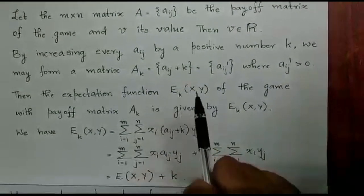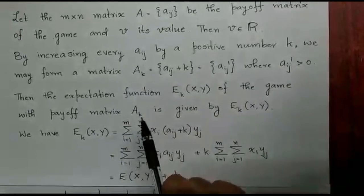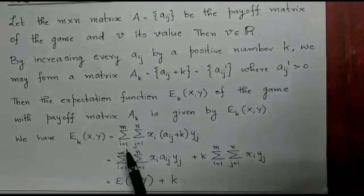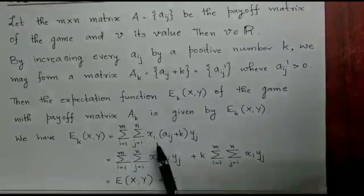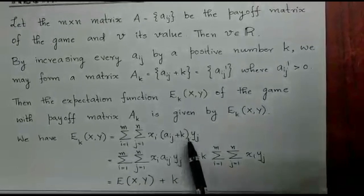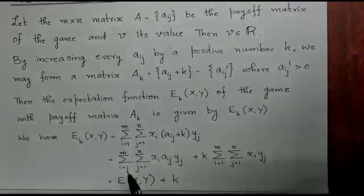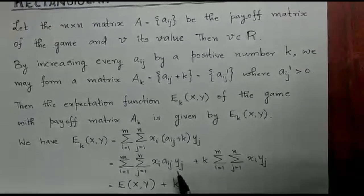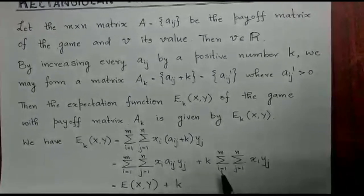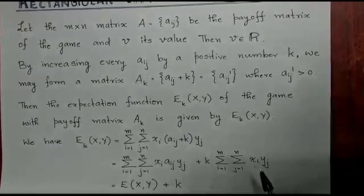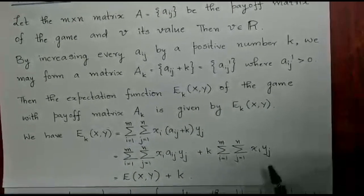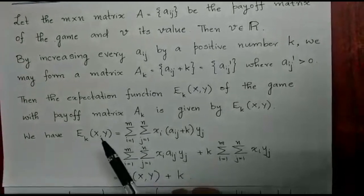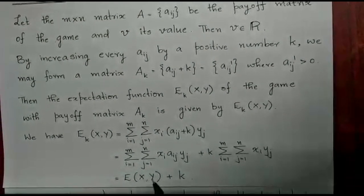Then the expectation function EK of XY of the game with the payoff matrix AK is given by EK of XY equal to summation i equal to 1 to M, summation j equal to 1 to N, Xi into Aij plus K into Yj. That is summation Xi into Yij. We split this: Xi Aij Yij plus K into summation i equal to 1 to M, summation j equal to 1 to N, Xi Yij. Now we know this quantity is 1, and this quantity is E of XY. So expectation K of XY reduces to expectation XY plus K.